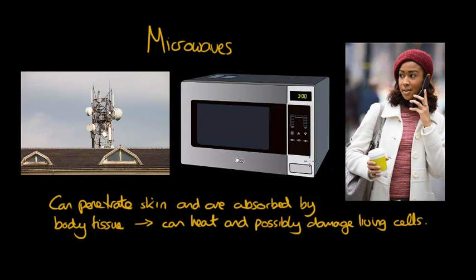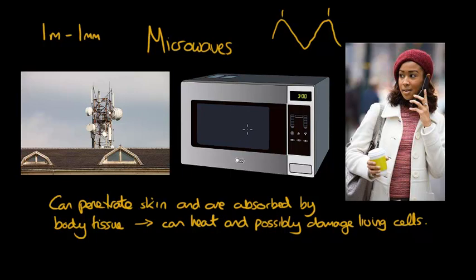Now as I said, it all depends on the wavelength — the distance from one peak to the next. With microwaves we're talking around wavelengths in the region of one meter to one millimeter. Cell phones generally have a wavelength of about 17 centimeters, whereas microwave ovens have 12 centimeter wavelengths or thereabouts. The longer wavelengths used in mobile phones won't heat as strongly as those shorter wavelengths.